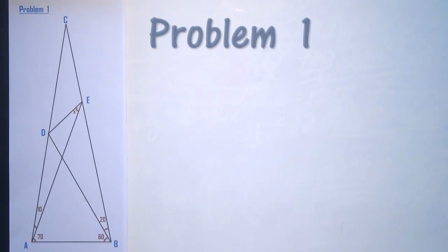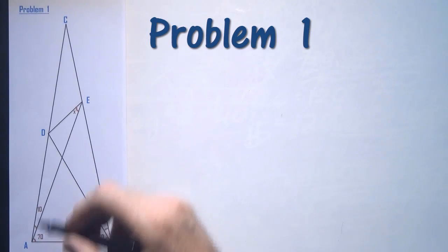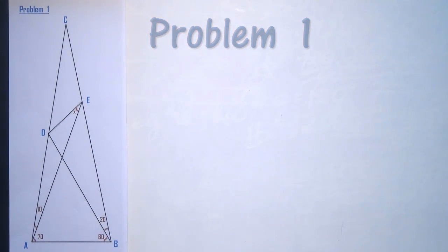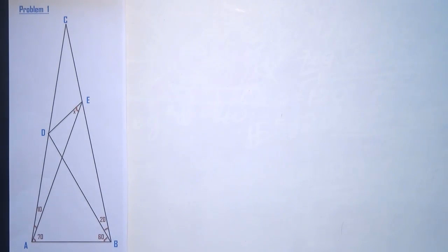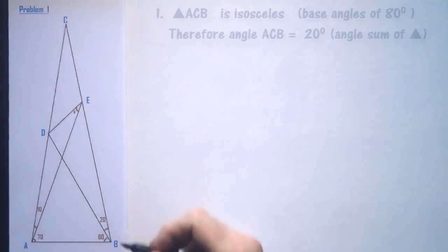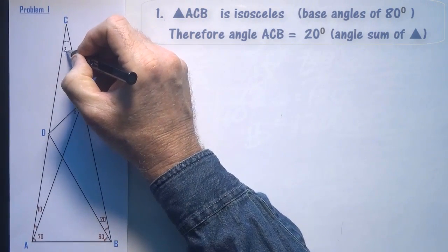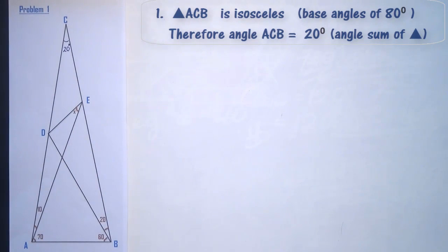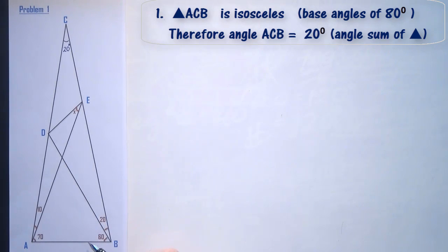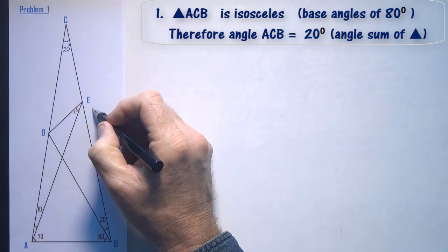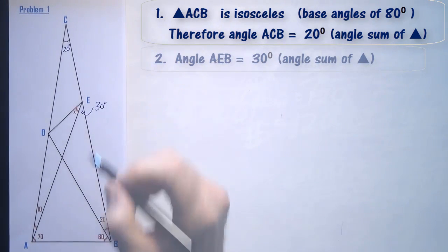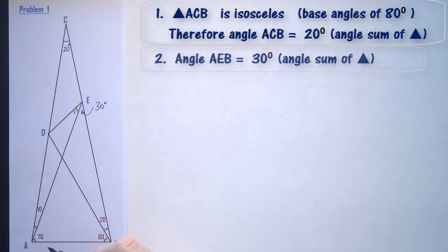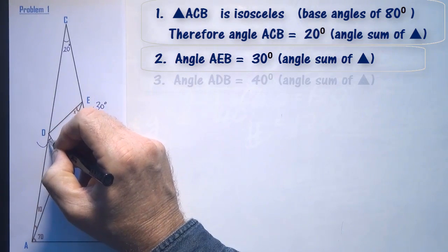Problem 1. The first thing to note is that triangle ACB is isosceles, having base angles of 80 degrees. Therefore, angle ACB will be 20 degrees. Now look at triangle AEB — we know the two angles there are 70 and 80, so this angle here will be 30 degrees. For triangle ADB, we know the angles are 80 and 60, so the angle will be 40 degrees.